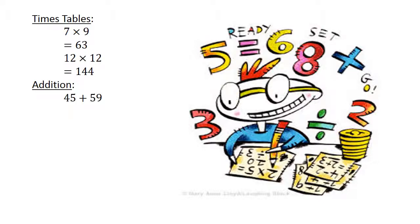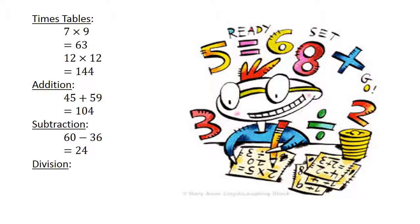Addition: 45 plus 59 equals 104. Subtraction: 60 minus 36 equals 24. Division: 40 divided by 4 equals 10.